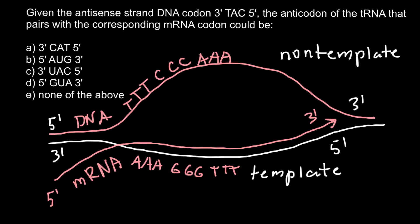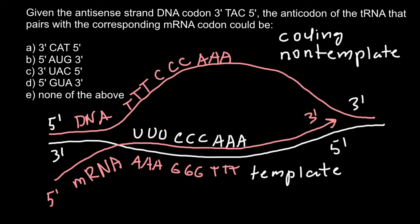As you can see now, the sequence of the mRNA is the same as the sequence of the non-template strand of the DNA, with one exception: thymine in mRNA is substituted with uracil. So the other name of the non-template strand of the DNA is the coding strand. This means that the template strand of the DNA has the alternative name non-coding strand of the DNA.